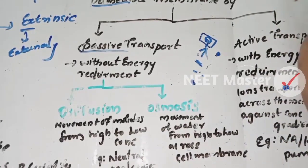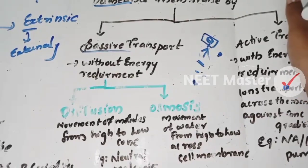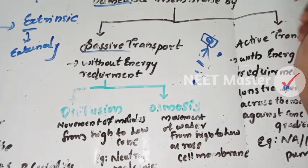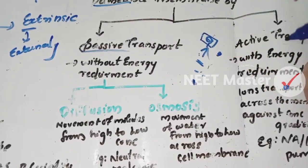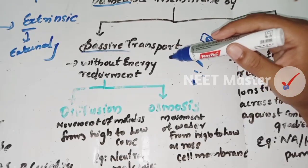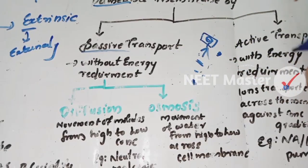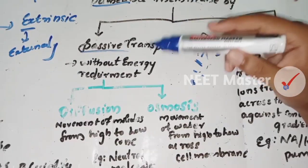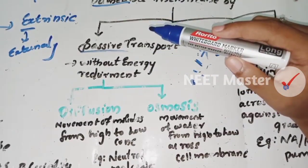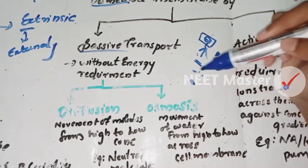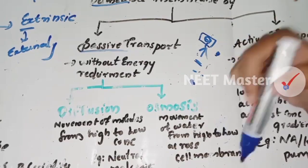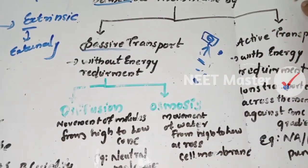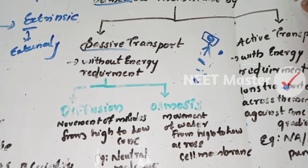To summarize cell membrane transport: passive transport has no energy requirement and includes diffusion of neutral molecules and osmosis of water molecules. Active transport requires energy and moves ions against the concentration gradient. Example: sodium-potassium pump.